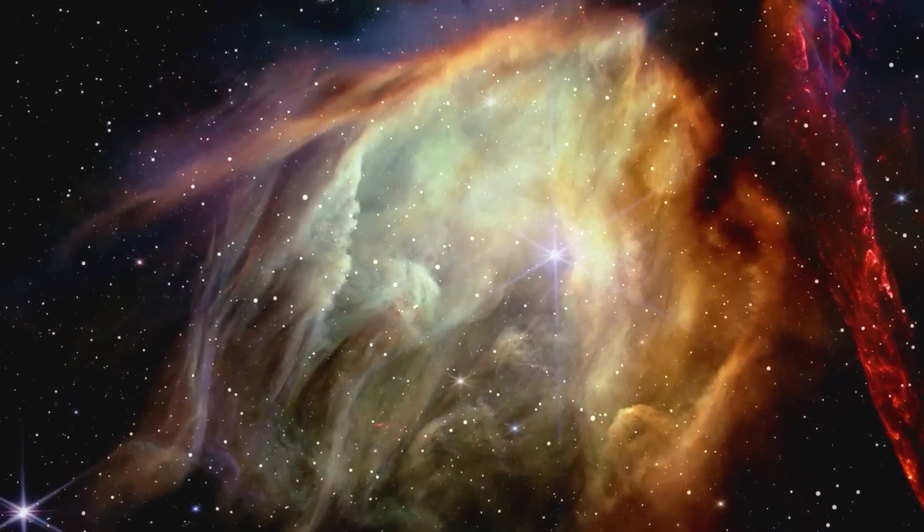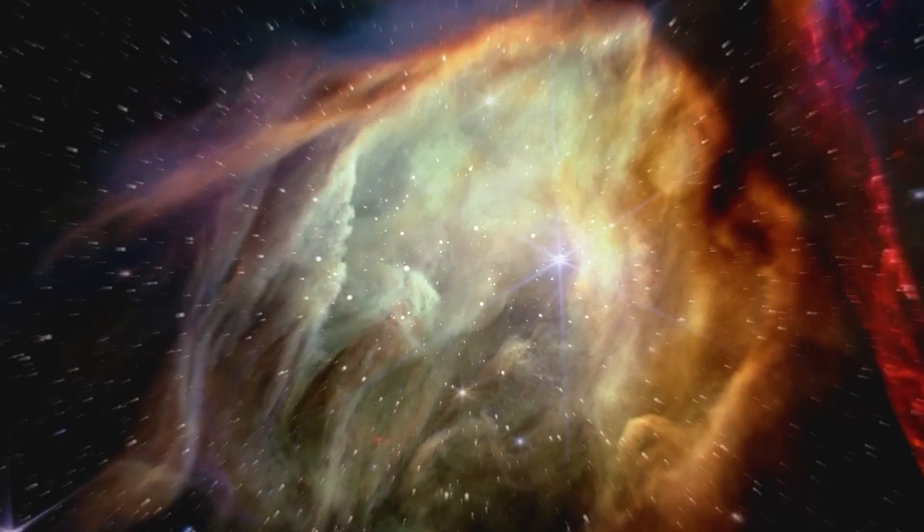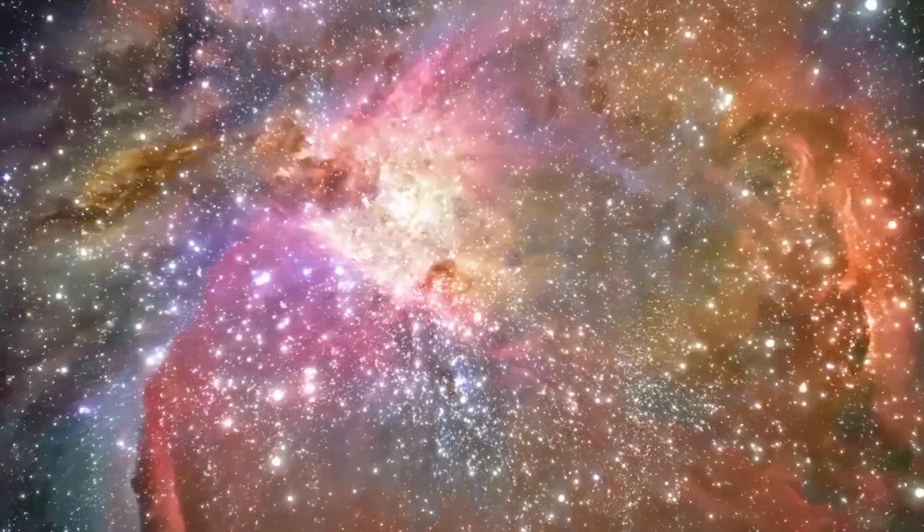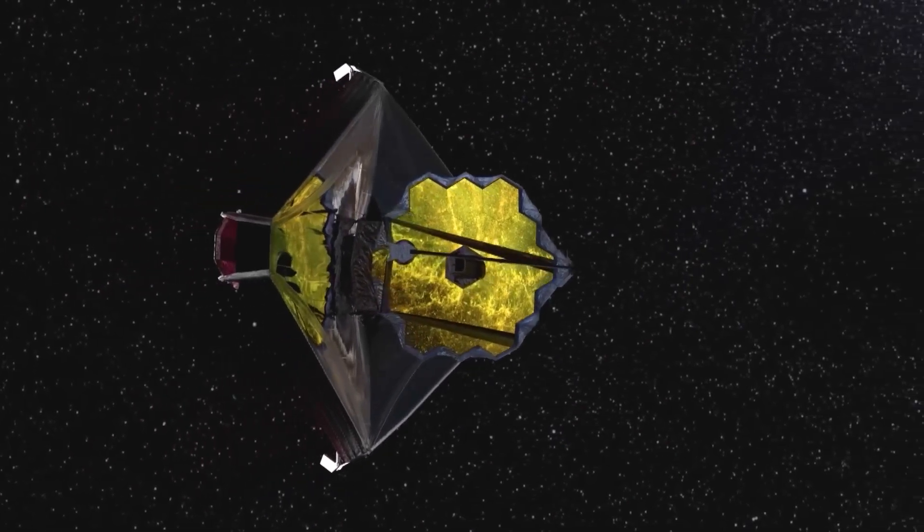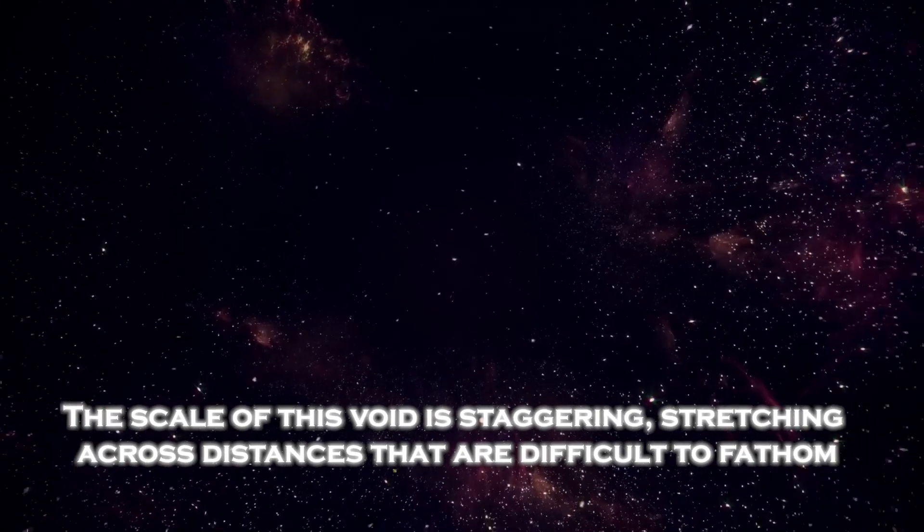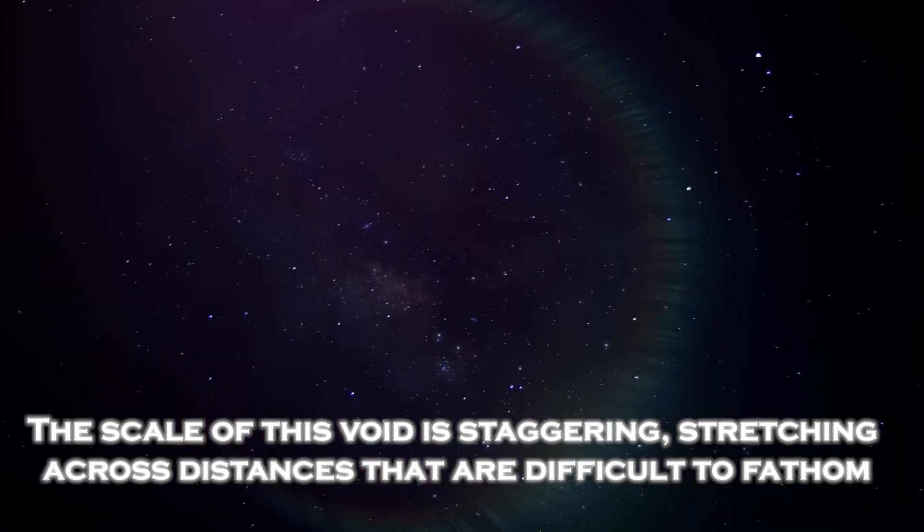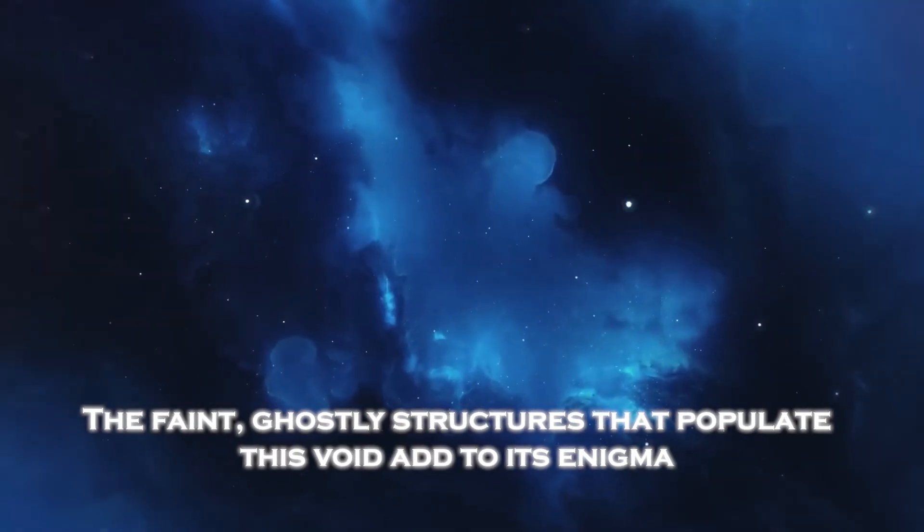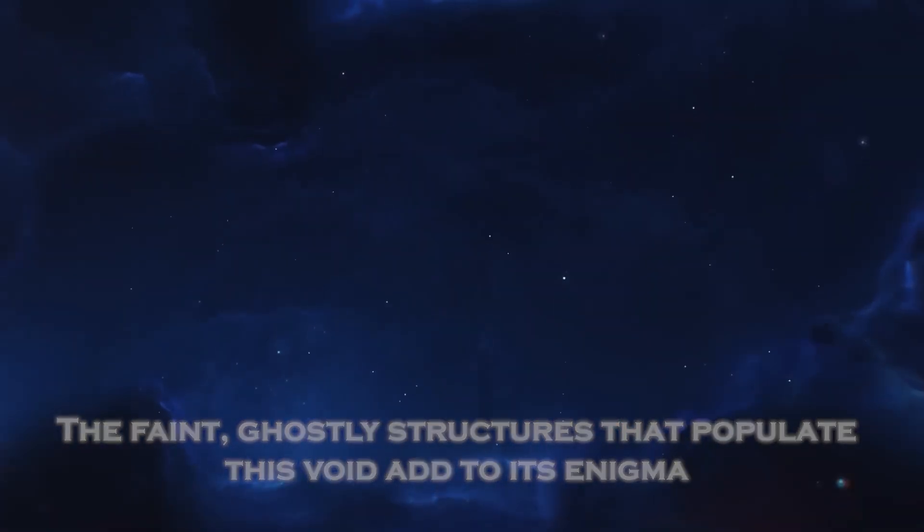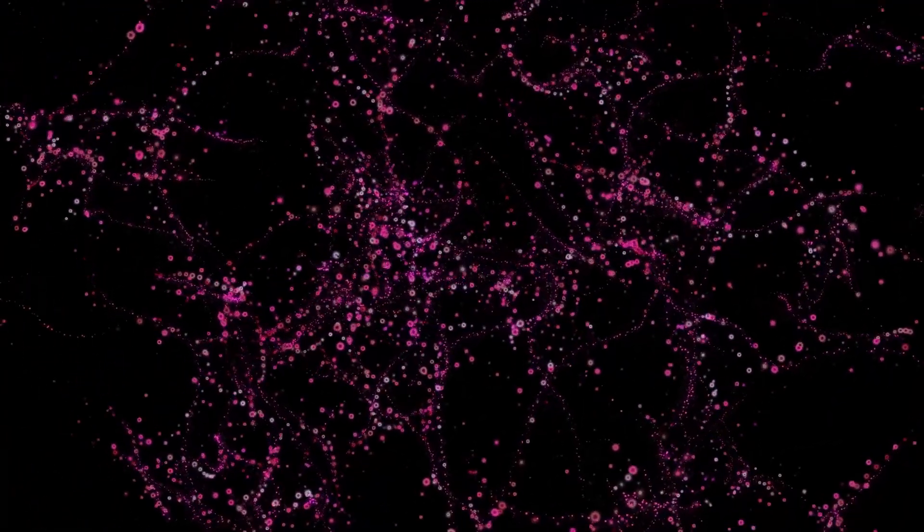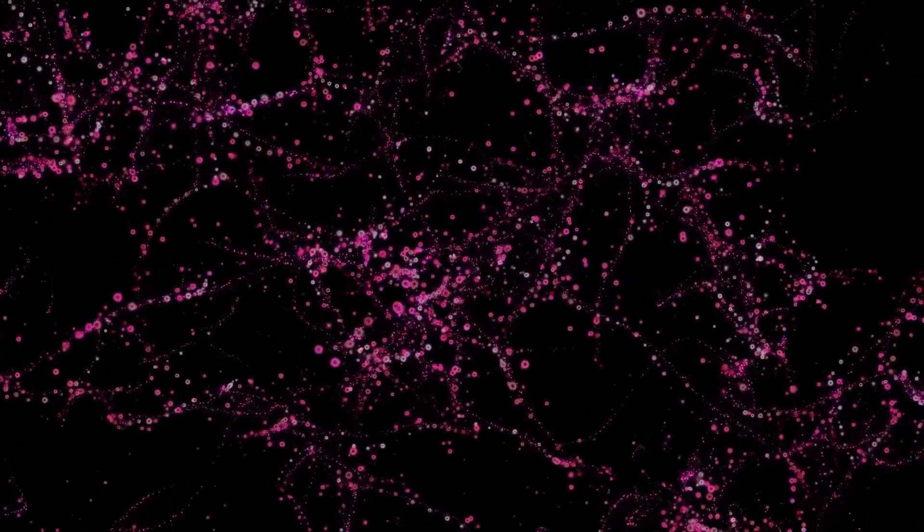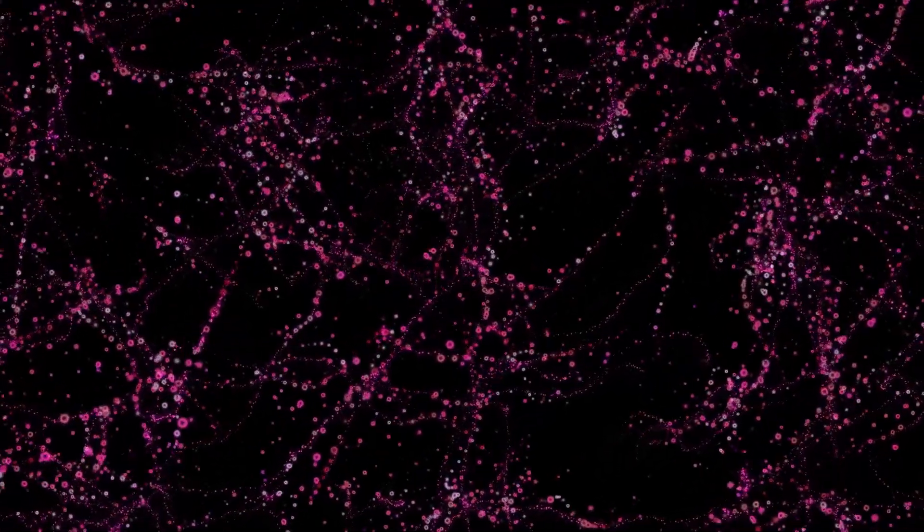However, the void revealed by the JWST is different. It is not only just a region of lower density but appears almost entirely devoid of matter as we know it. The scale of this void is staggering, stretching across distances that are difficult to fathom. The faint, ghostly structures that populate this void add to its enigma. These structures do not correspond to any known type of galaxy or star formation, and they seem to follow an order that defies the randomness typically associated with such voids.